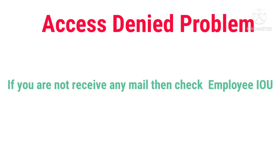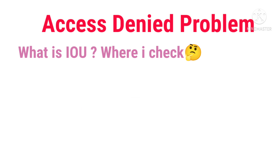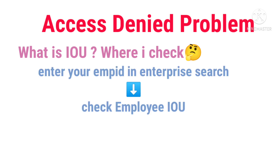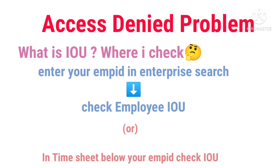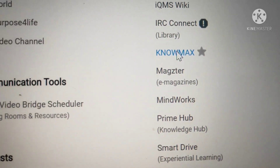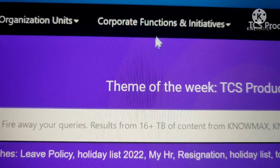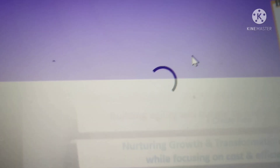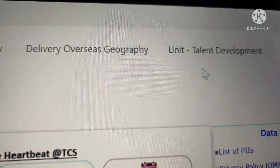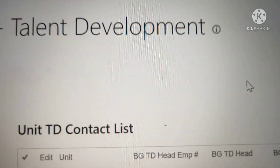If you did not receive any mail, check your IOU. Some members ask what is IOU and where to check it. Enter your employee ID in Enterprise Search — all your details, project details and total details are present there. Also, a shortcut: in the Timesheet app, below your employee ID, there is your employee IOU. Check your IOU name, then search in NOMADS where there is a list of IOUs. Compare your IOU and find the Talent Management team for your IOU, then mail them or connect in Teams.